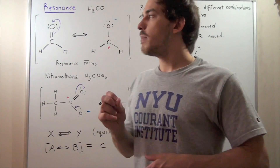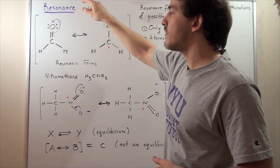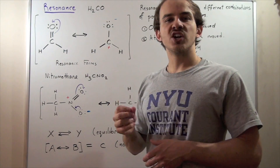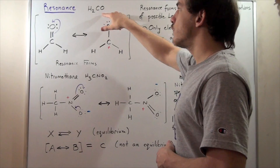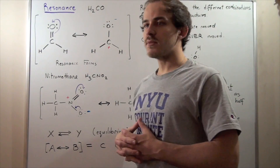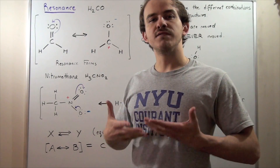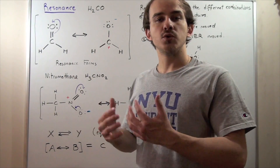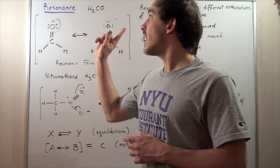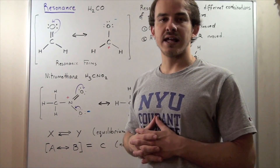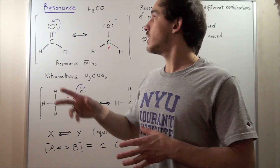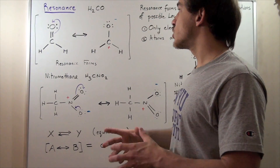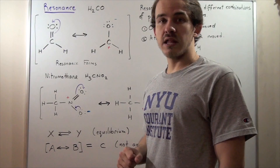Let's begin by using formaldehyde. This compound is composed of one carbon, one oxygen, and two H atoms. We're going to draw the Lewis dot structure for formaldehyde. Our first step is to count the number of valence electrons — those electrons that come from the outermost shells of our atoms. Oxygen has six valence electrons, carbon has four, and H has one each. We have two H's, so two valence electrons come from our two H's, giving us a total of 12 valence electrons.